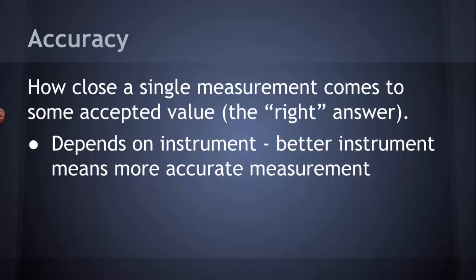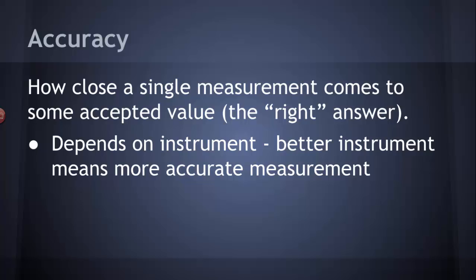So, if you use a balance, for example, that is accurate to a hundredth of a gram, that's pretty good. But if you can use the analytical balance, which is accurate to a ten-thousandth of a gram, well, that's more accurate. It's closer to the right answer. It also depends on how well you read the instruments. If you're reading them very carefully and you are estimating that last digit, then your measurement is going to be more accurate.